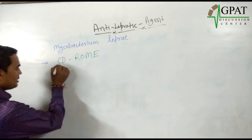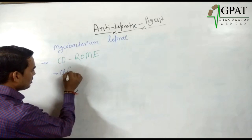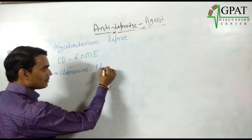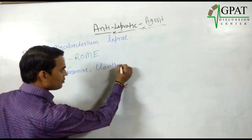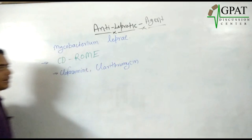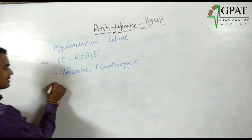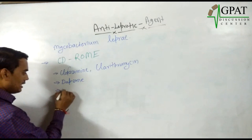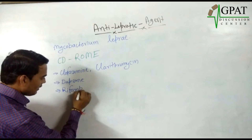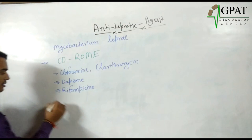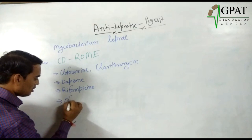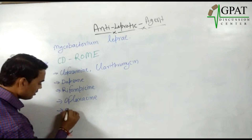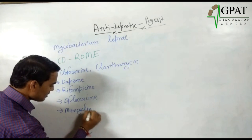Remember here: C is for Clofazimin, as well as another drug from C — Clarithromycin. Next, D is for Dapsone. R is for Rifampicin. Next, O is for Ofloxacin. Next, M is for Minocycline.